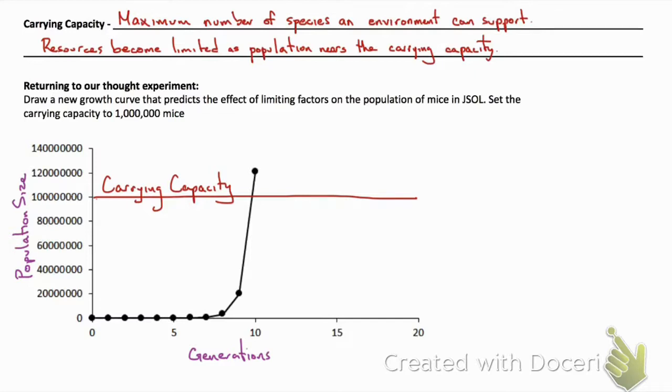Our theoretical graph showed that within 10 generations we would pass or surpass this carrying capacity. But in fact, what we find is the following...